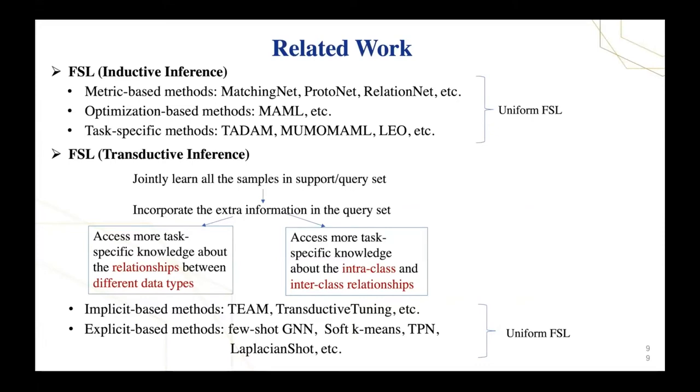Based on how the model incorporates unlabeled data, existing transductive approaches can be separated into implicit and explicit methods. Implicit transductive methods directly use the entire unlabeled feature information to enhance classification boundaries, while explicit methods measure the underlying relationship between data to enrich class features.